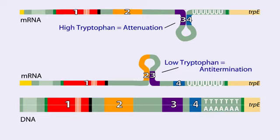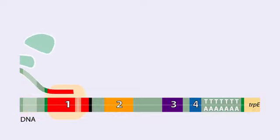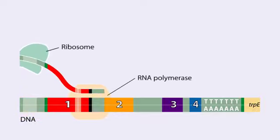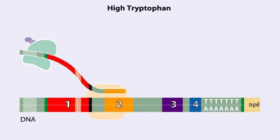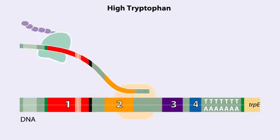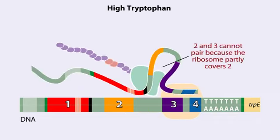Let's examine how these alternate structures arise. RNA polymerase begins transcribing the DNA. Closely following RNA polymerase, a ribosome begins to translate region 1. When tryptophan is abundant, the ribosome doesn't slow down at the tryptophan codons. By the time region 3 is transcribed, the ribosome has already moved past the tryptophan codons to partly cover region 2.